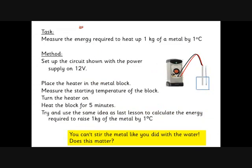We've got this number: 4,200 joules is what's needed to heat up one kilogram of water by one degree C. If I've got two kilograms of water, I need twice as much energy. If I want to heat it up by two degrees C, I need twice as much energy, and so on. But this number only applies to water — different materials have different values.